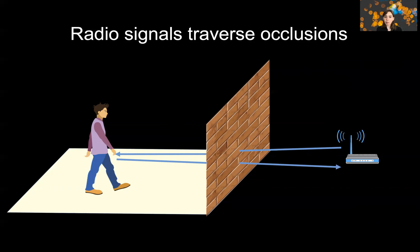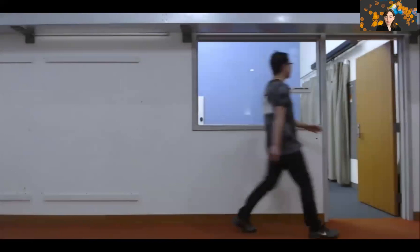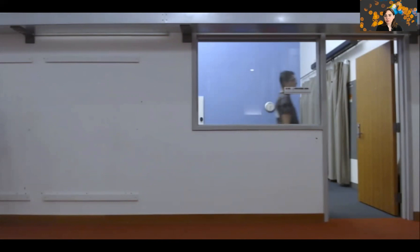We can track how people move and get some information about them through obstacles and walls. Here I'm going to show you how we can do pose estimation through a wall using a radio signal. Here is my student. As he goes behind the wall, you're going to see that we will be able to use radio signal to extract his pose purely using the radio signal. We follow his stick figure using the radio signal through the wall.